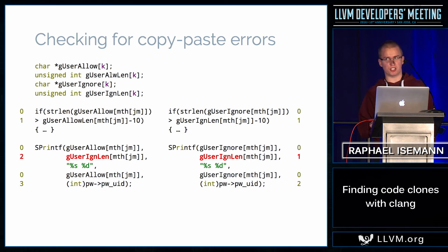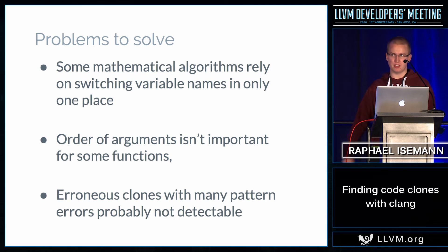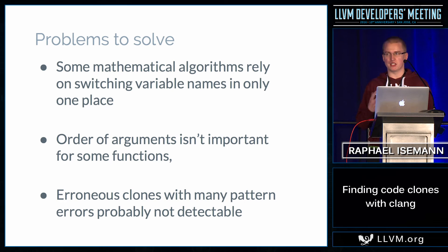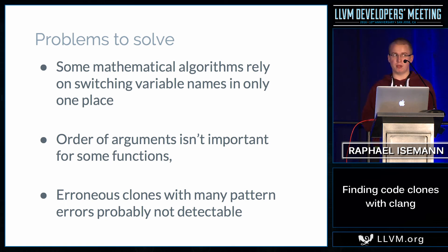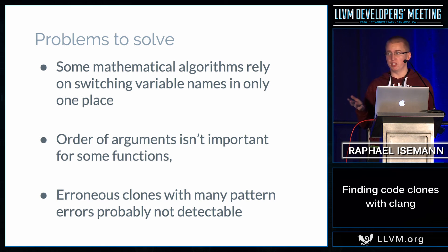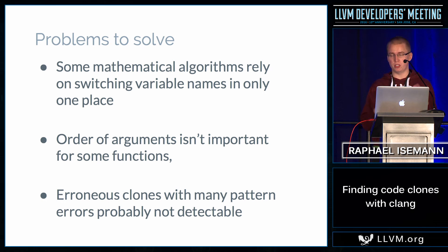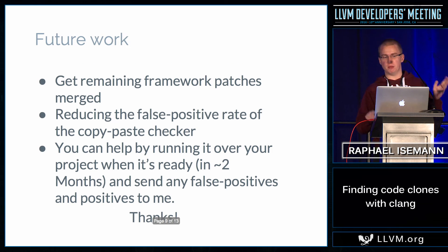That sounds really cool, but it's not production ready yet. There are a few things that still need to be solved. For example, mathematical algorithms sometimes intentionally switch variables around — reporting those would be a false positive. Similarly, in multiplication the order doesn't matter, so reporting pattern differences there is also a false positive. False positives are still a problem. What we're trying to solve is a classic classification problem: given a clone, is it valid or not? To get this checker production ready, we may need your help.